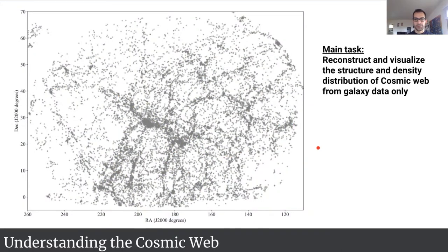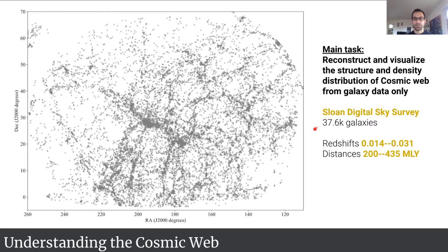The main task here was reconstructing and visualizing the structure of the cosmic web just using galaxy data only. Here on the left you see 37,000 galaxies from the Sloan Digital Sky Survey, which is our canonical data set in this work. This is a 2D projection of these galaxies in 3D space from which we want to obtain the cosmic web estimate.